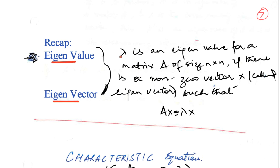Remember, we say that lambda is an eigenvalue for a matrix A of size n by n if there is a nonzero vector x such that Ax equals lambda x. This nonzero vector x is called the eigenvector corresponding to the eigenvalue lambda. Very important: x has to be nonzero.